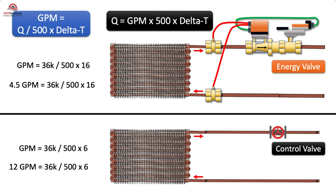If the heat load drops to 36,000 BTUs per hour, which is 30% of the peak design load, then we get 4.5 GPM through the energy valve at a 16 degree delta T. The traditional system is requiring 12 GPM to get the required heat transfer.